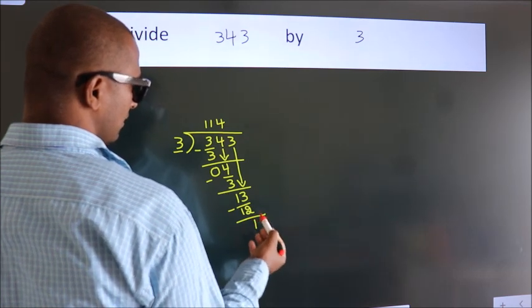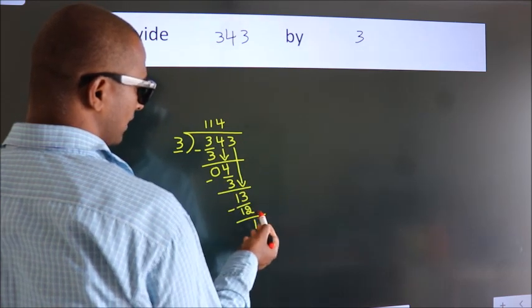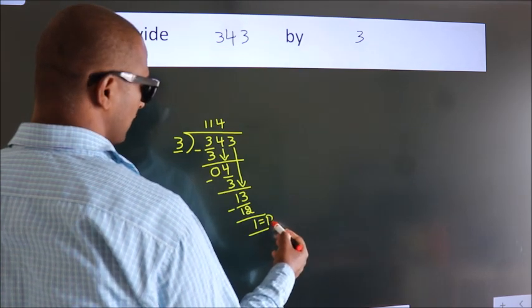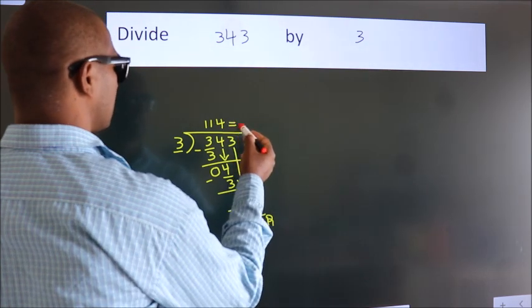After this, no more numbers to bring down. So we stop here. This is our remainder. This is our quotient.